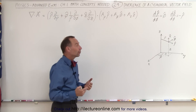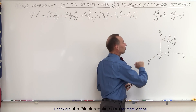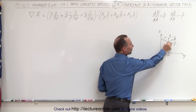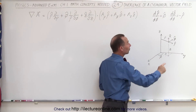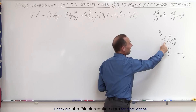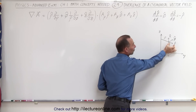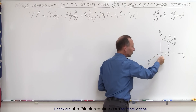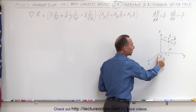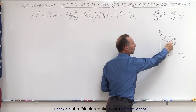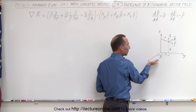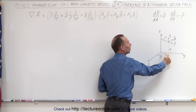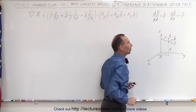To remind ourselves what that looks like, here we have a drawing showing the x, y, and z axes. In cylindrical coordinates, any point in space is described by rho — the distance from the z-axis with unit vector rho-hat — the angle phi counterclockwise from the x-axis with unit vector phi-hat, and the z coordinate with unit vector z-hat.